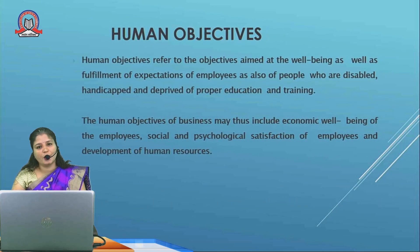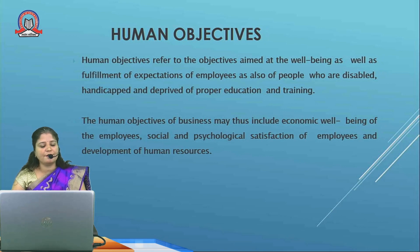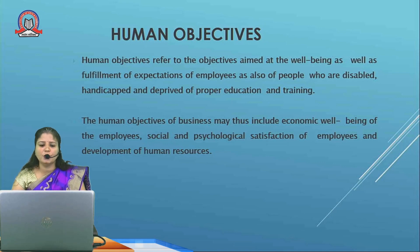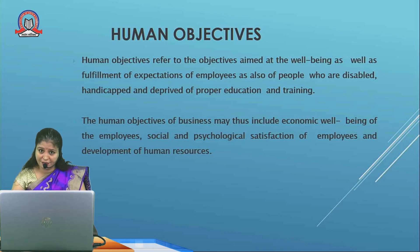Next is human objective. Human objectives refer to the well-being and fulfillment of the expectations of employees. There should be humanity grounds in business. Disabled, handicapped, or deprived members should be provided proper education and training. Human objectives include the well-being of employees, and we should try to have psychological satisfaction of employees — by increasing salary and wages if they are deserving it, and by providing basic necessities in a good manner.